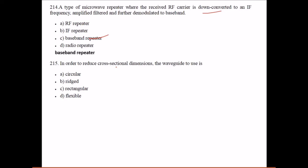In order to reduce cross-sectional dimensions, the waveguide to use is the ridged one. So if you want to reduce the cross-sectional dimension, the waveguide has to be ridged.